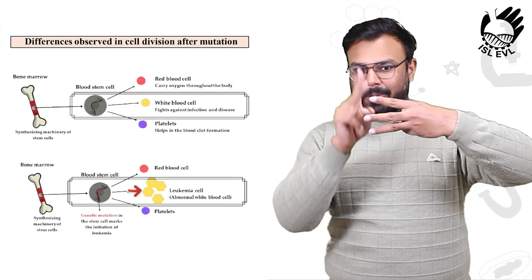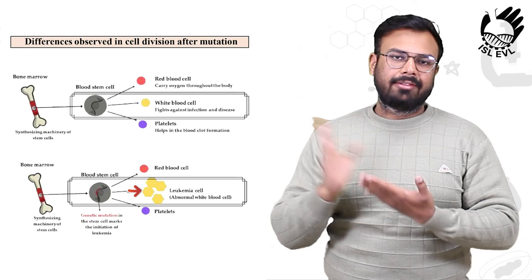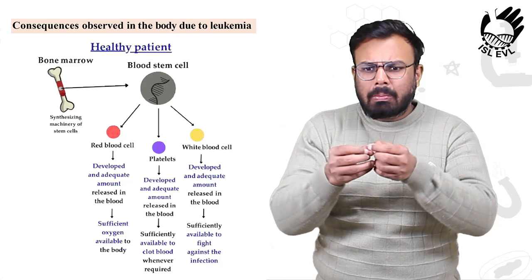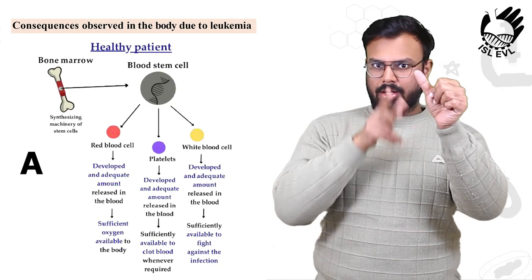In the second picture, the abnormal white blood cell marks the initiation of leukemia. Consequences observed in the body due to leukemia: We will compare the differences between a healthy patient and a leukemia patient.